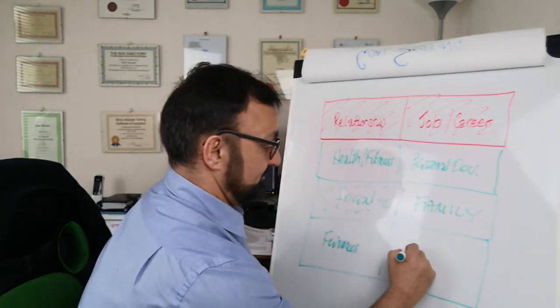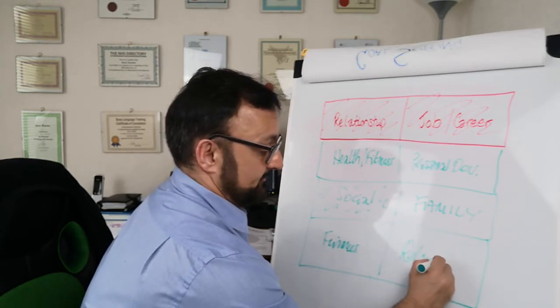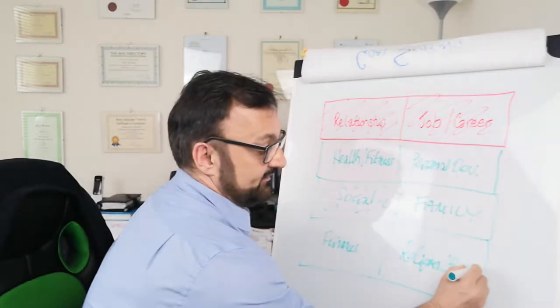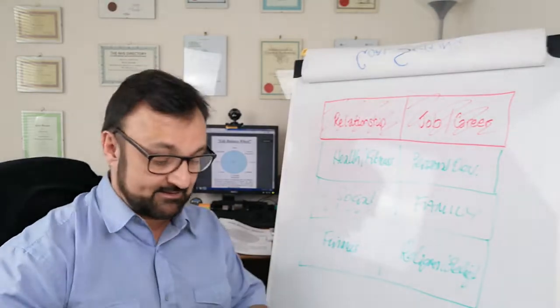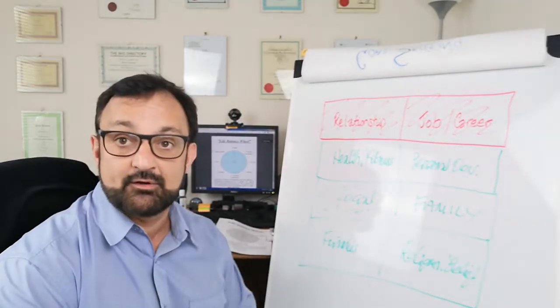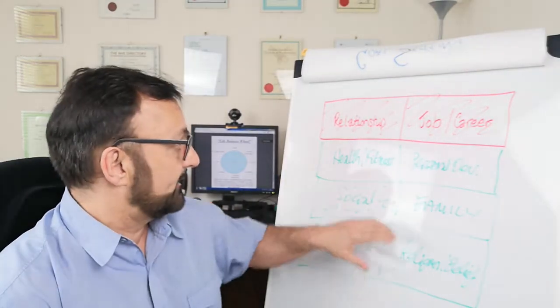And here we've got finances. And belief, religion or belief. Generally, they're the kind of accepted eight categories or sectors of your life.